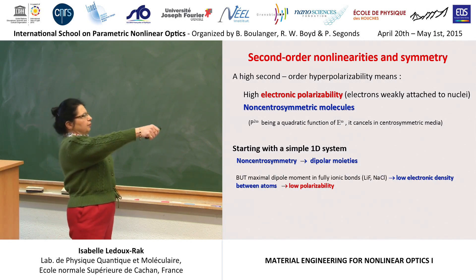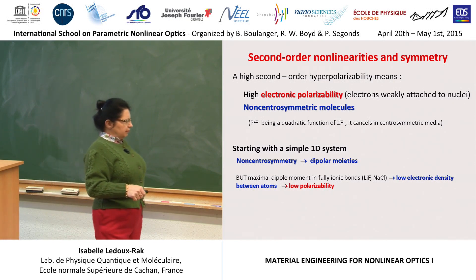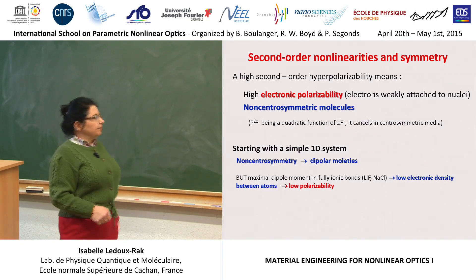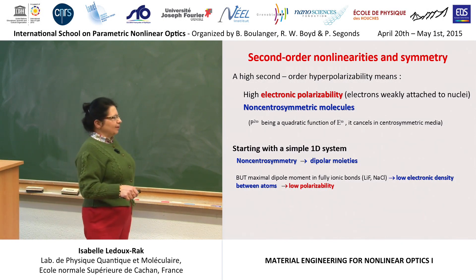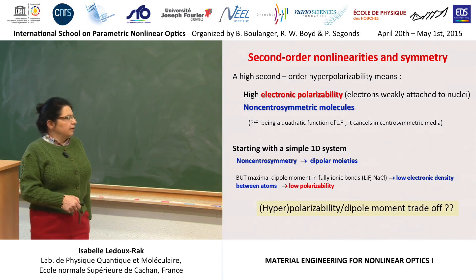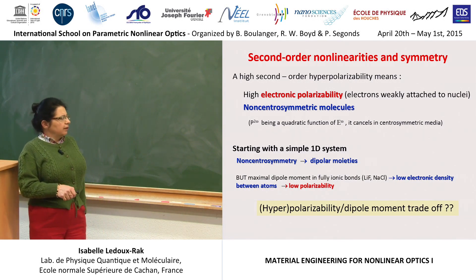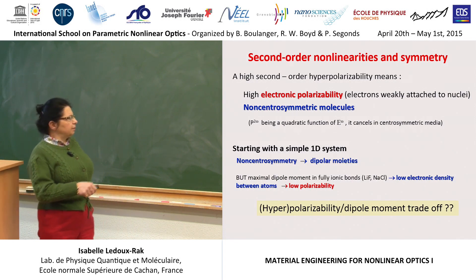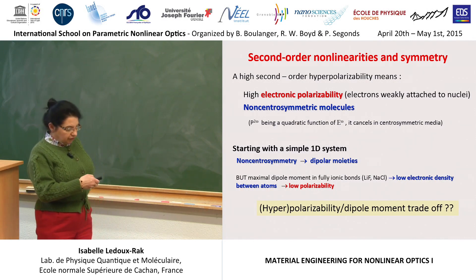We can raise a question: we must have polarizability, and we must have non-central symmetry. What happens, for example, if we imagine a fully strongly ionic bond, such as halogenides? In this case, there is a very small, low electronic density between atoms, and the polarizability of the ionic bond is very low. So we feel we will have to find a compromise between good electronic polarizability and the ionicity of the chemical bond — a relatively permanent issue of this research about optimization of dipolar systems.